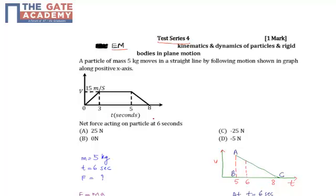The net force acting on the particle at 6 seconds will be option a 25 newton, option b 0 newton, option c minus 25 newton and option d minus 5 newton.